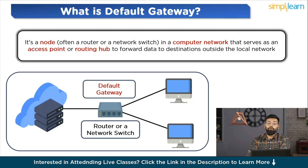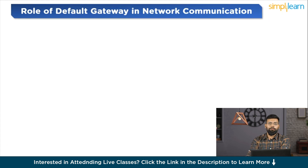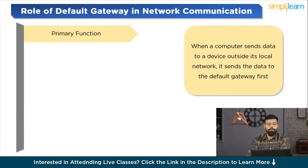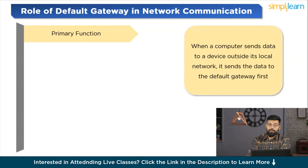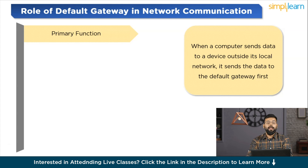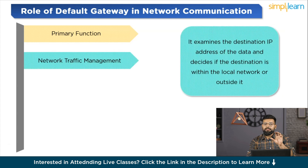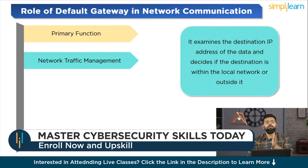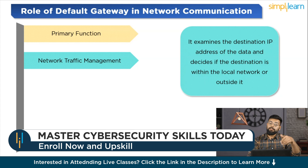Now let's look at the role of the default gateway in network communication. Starting with the first role — primary function: the default gateway acts as an intermediary that routes traffic from a local network to devices in another network. When a computer sends data to a device outside its local network, it sends the data to the default gateway first. Next is network traffic management: the gateway examines the destination IP address of the data and decides if the destination is within the local network or outside it. If outside, the gateway forwards the data to the external network.